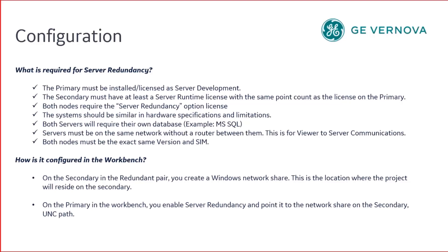How is it configured in the Simplicity workbench? On the secondary in the redundant pair, you create a Windows network share. This is the location where the project will reside on the secondary. On the primary in the workbench, you enable server redundancy and point it to the network share on the secondary via UNC path.